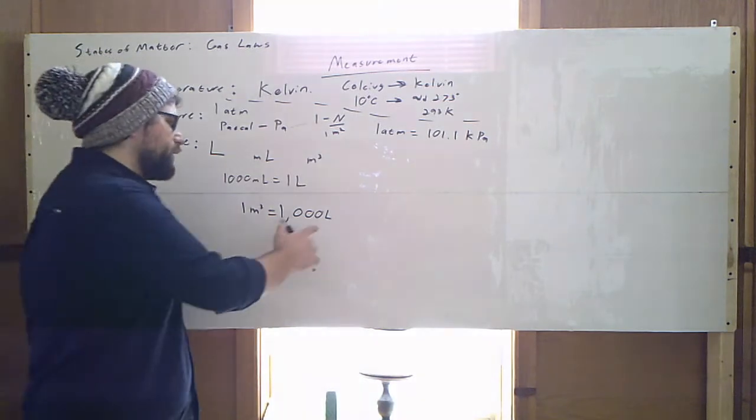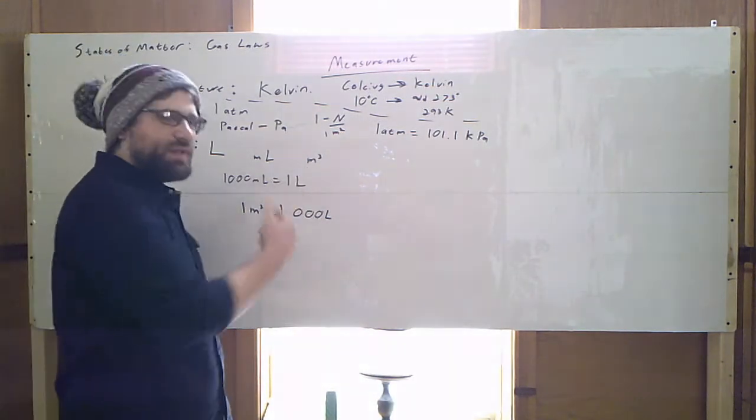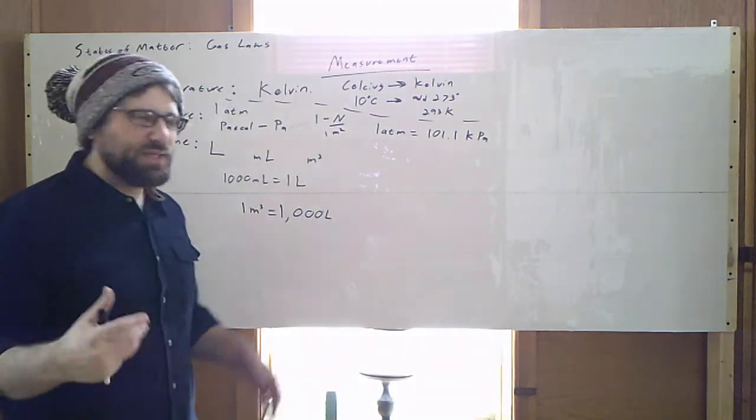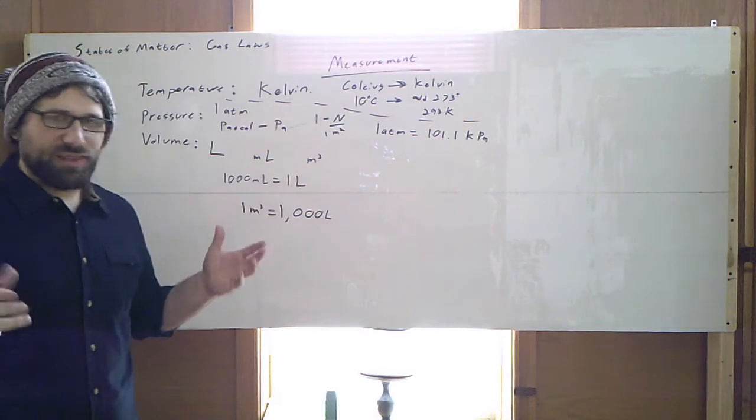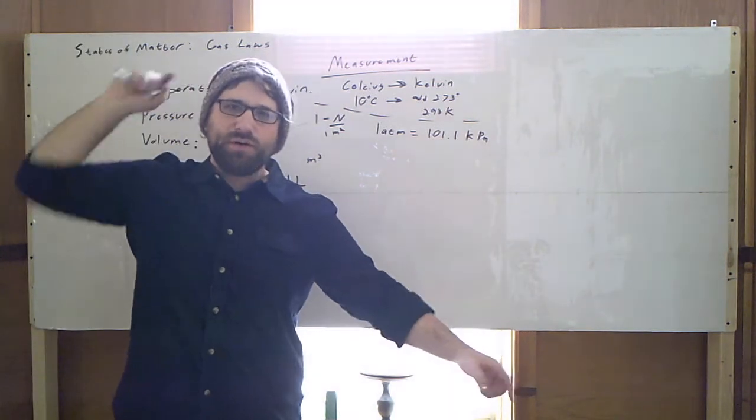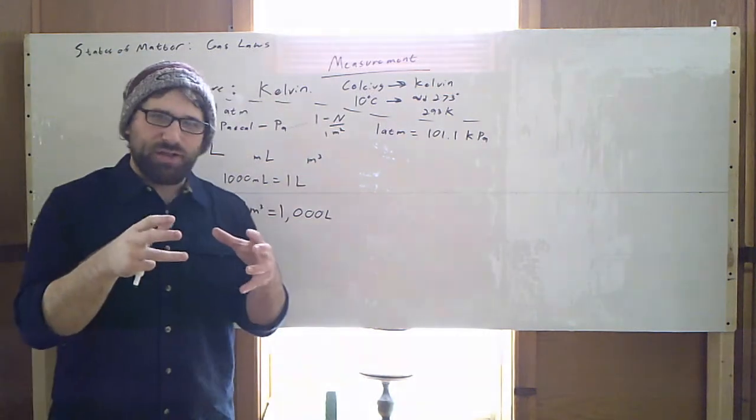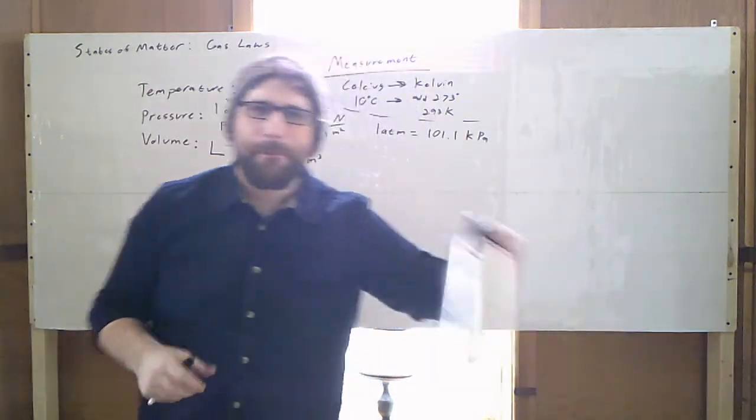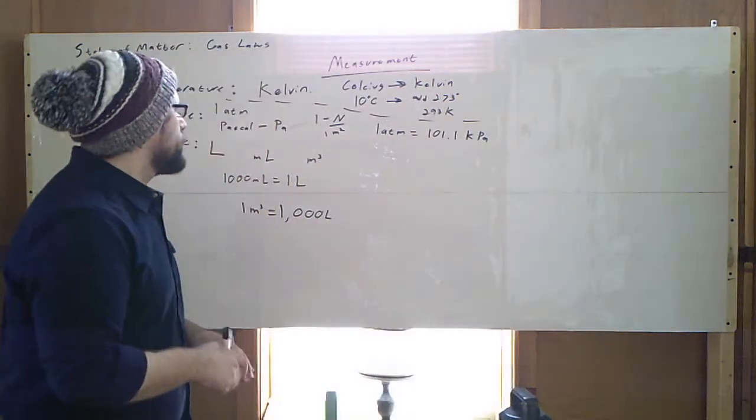We came up with liter because even though we base all of our length measurements on the meter in the SI system, a cubic meter is a whole heck of a lot of stuff. One cubic meter would be a massive cube of liquid. We don't want a massive cube of liquid. We want to keep track of things more in the bottle size. This is about a liter.